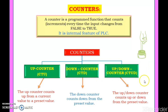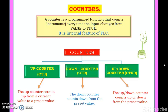An up-down counter counts either up or down from the preset value. So the three types are: up counter, down counter, and up-down counter.